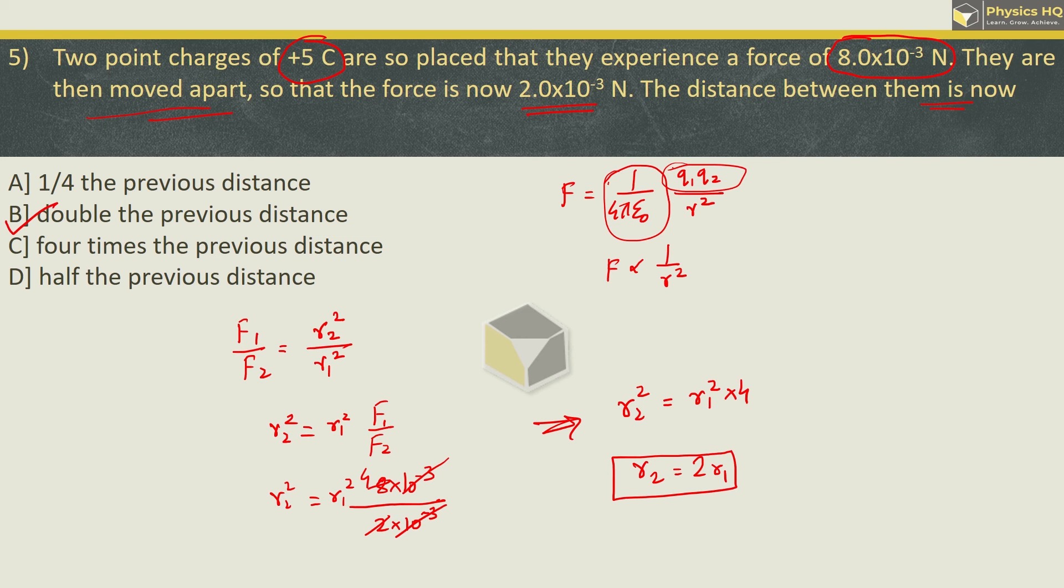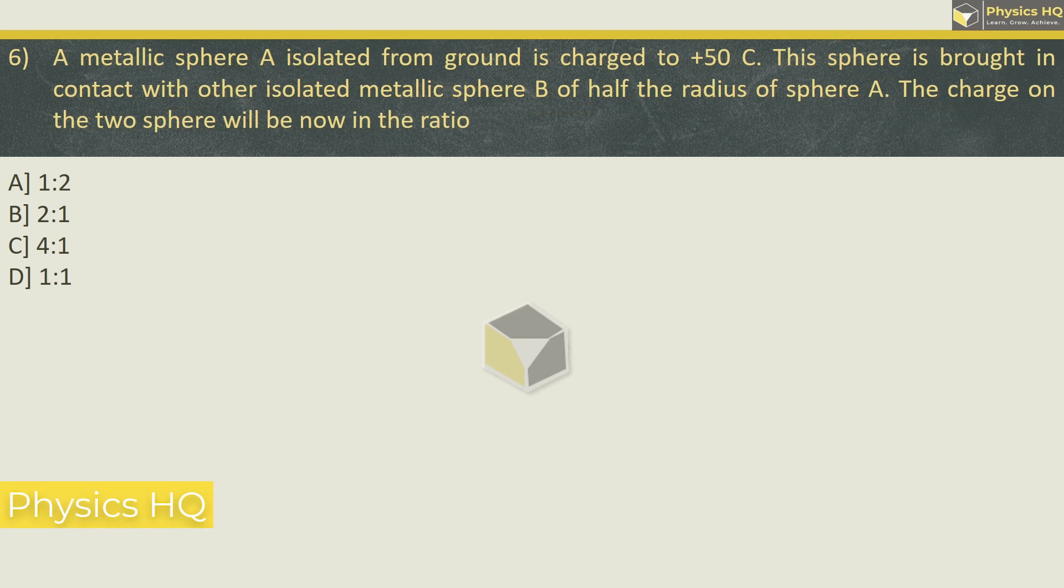Next. A metallic sphere A isolated from ground is charged to 50 coulomb. The sphere is brought in contact with other isolated metallic sphere B of half the radius of sphere A. The charge on the two spheres will be now in the ratio of 1 is to 2, 2 is to 1, 4 is to 1, or 1 is to 1.